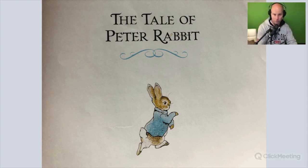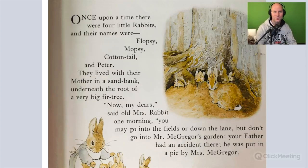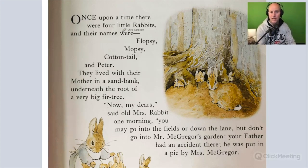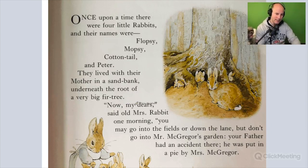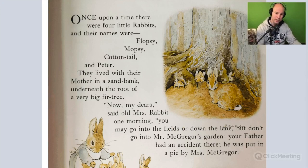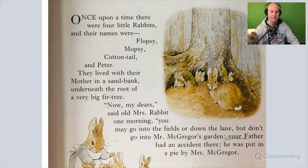The Tale of Peter Rabbit by Beatrix Potter. Once upon a time, there were four little rabbits and their names were Flopsy, Mopsy, Cottontail, and Peter. They lived with their mother in a sandbank underneath the root of a very big fir tree. And now, my dears, said old Mrs. Rabbit one morning, you may go into the fields or down the lane, but don't go into Mr. McGregor's garden. Your father got an accident there. He was put in a pie by Mrs. McGregor.